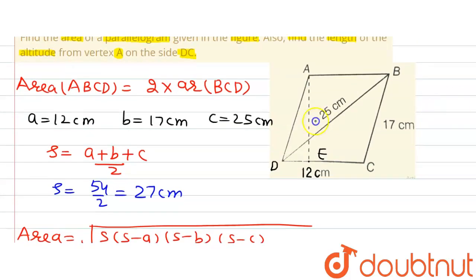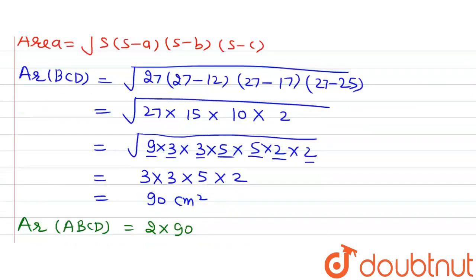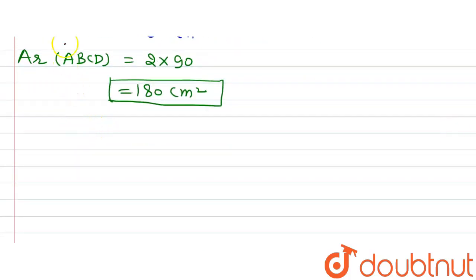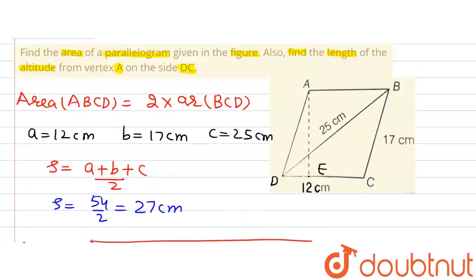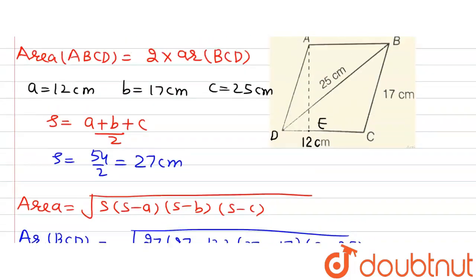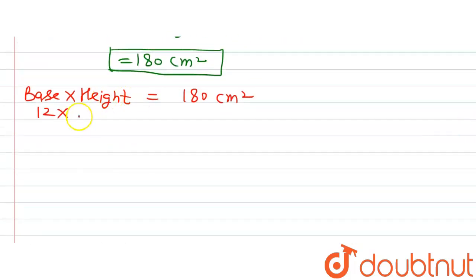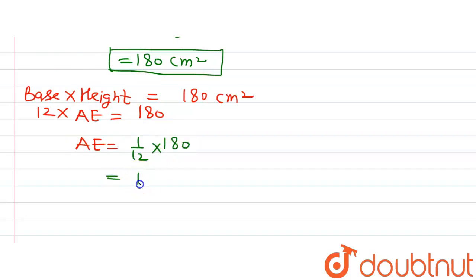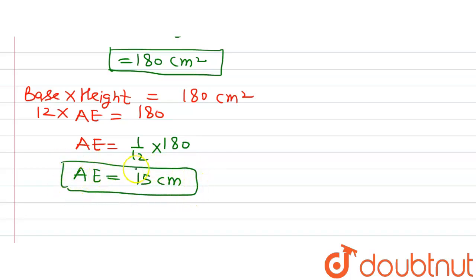For the second part, we find the length of AE. The area of a parallelogram also equals base × height. So base DC × AE = 180 cm². With DC = 12 cm, we get AE = 180 / 12 = 15 cm. So the length of the altitude AE is 15 cm.